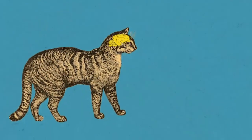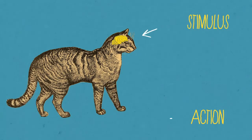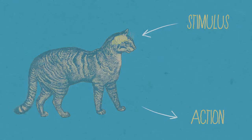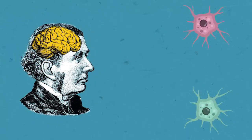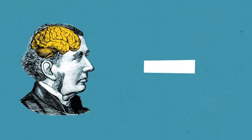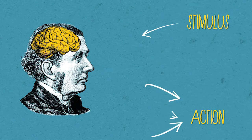In most animals, these connections are fixed, leading them to behave in a more automated way. However, in our brain, we have more flexible connections, which allows us to adapt, learn, and consider more possibilities between a stimulus and an action.